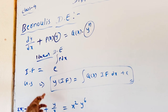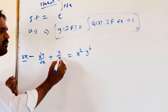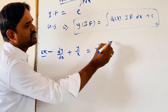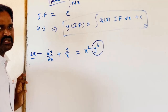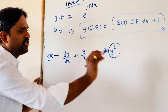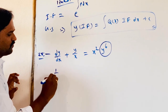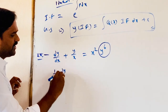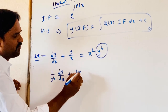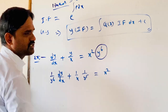We have an example for Bernoulli's differential equation: dy/dx plus y/x is equal to x² times y⁶. First of all, observe the additional term y⁶. Divide the total differential equation by y⁶. Then we will get (1/y⁶)(dy/dx) plus (1/x)(1/y⁵) is equal to x².